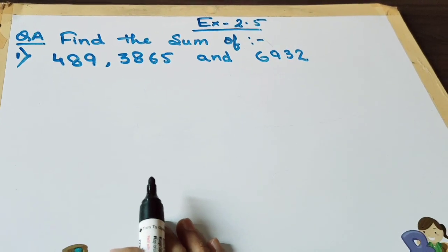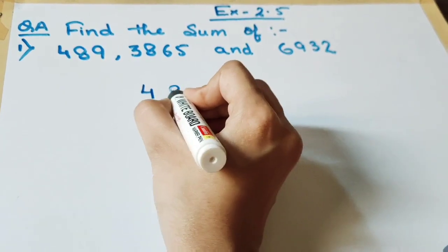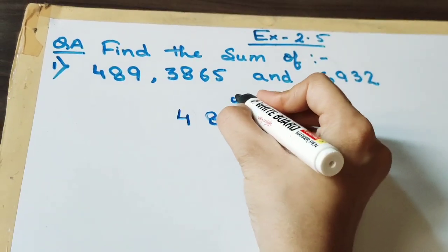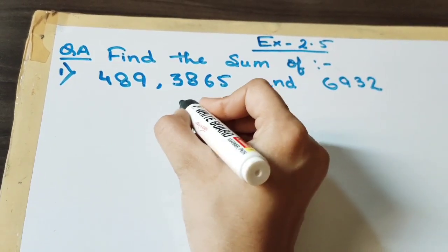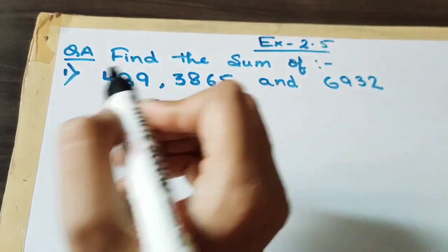So first of all we will write down the first number, 489. Now remember one thing. This is 1's place, this is 10's place, this is 100's place and we have up to 4. So we will write here 1000 also.